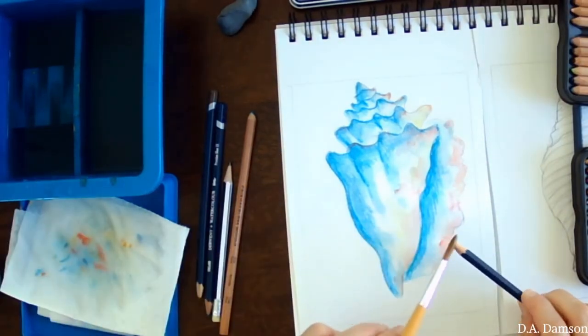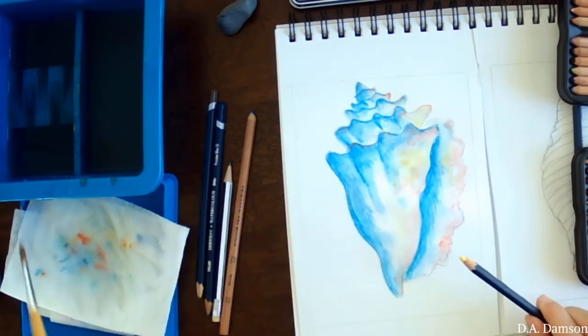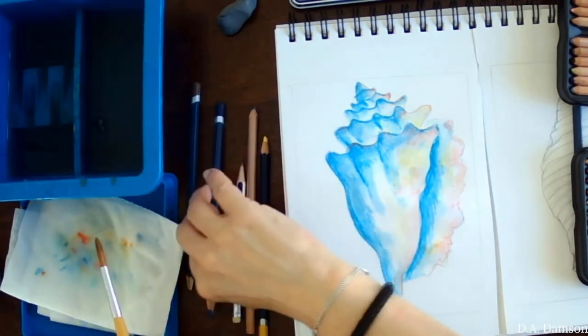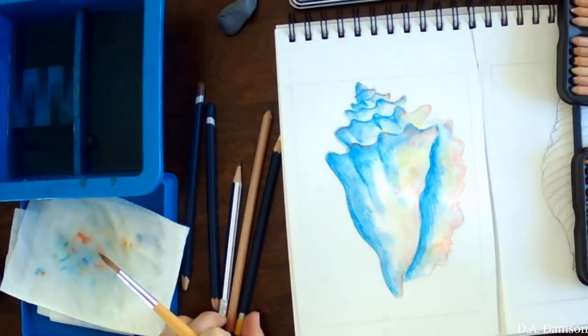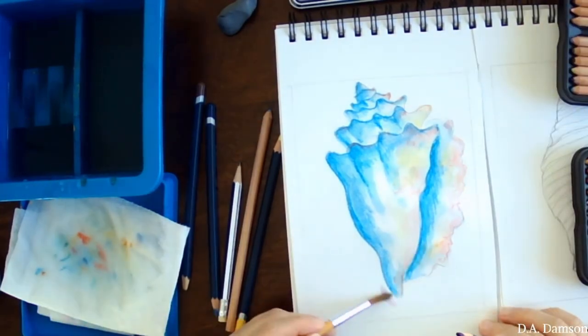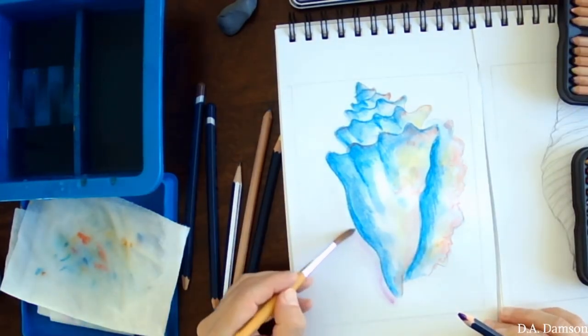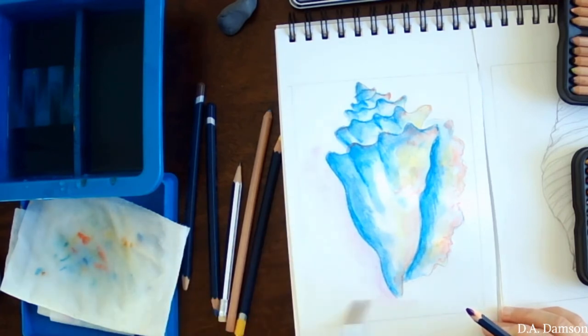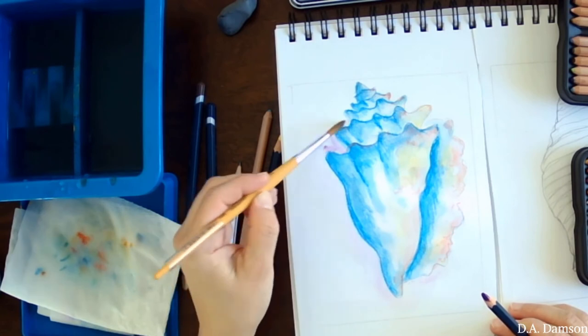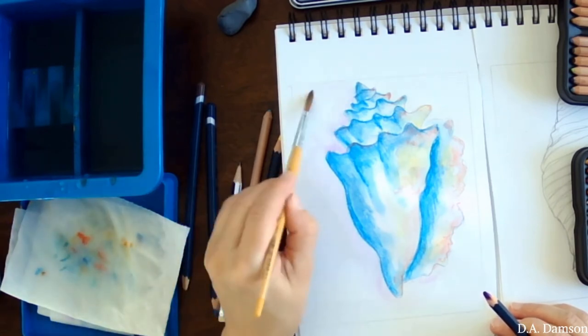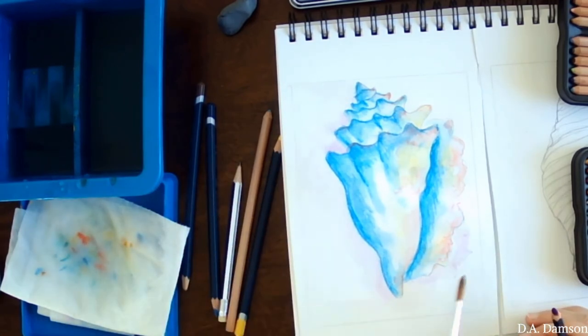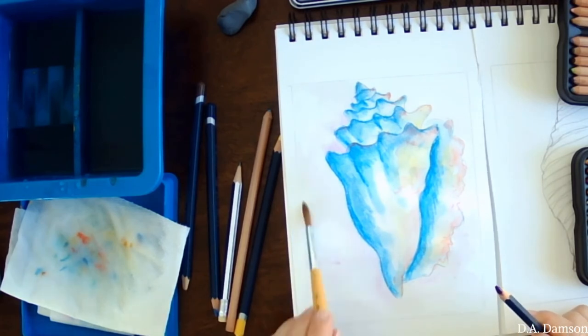And I'm using three colors. One is like a reddish pink. Then I have almost like a very light beige color and the blue. And here for the shadow, I'm adding a little bit of a purple so the shell is more grounded. It seems to be planted on some sort of a surface versus just kind of looking like it's floating.